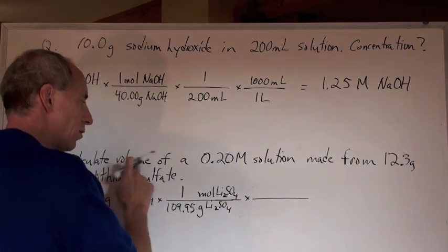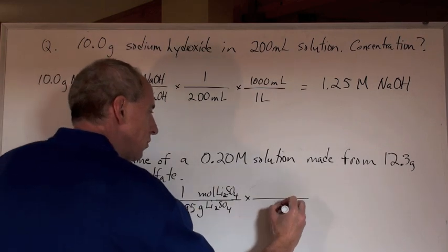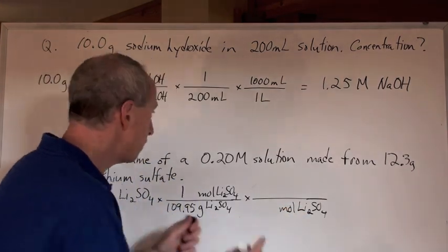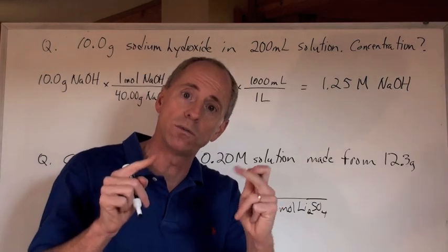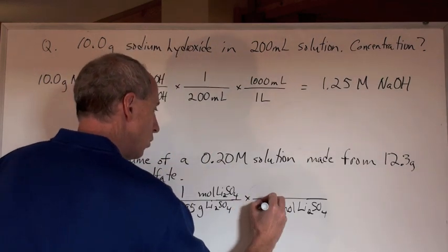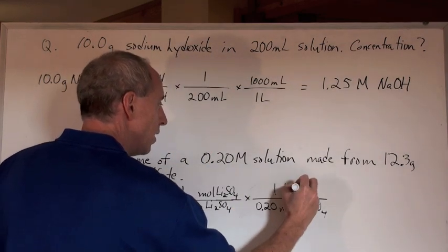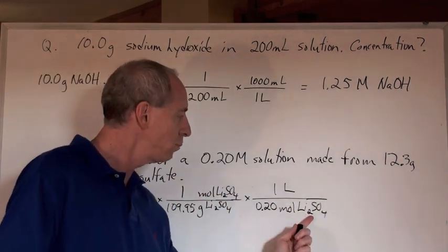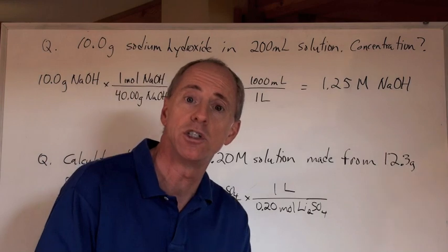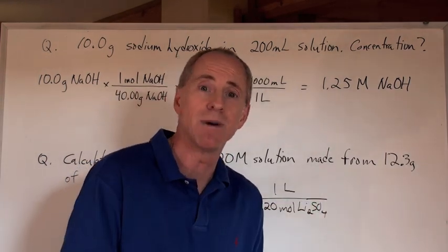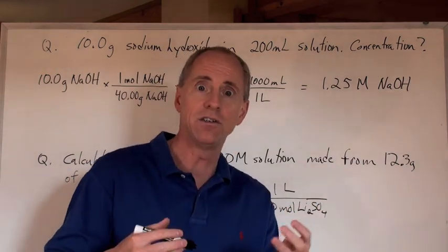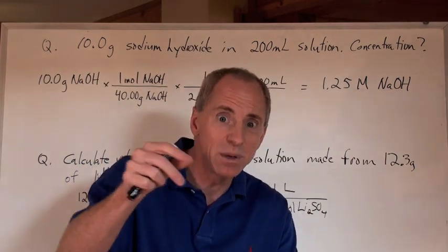What do I want? I want volume. I don't want moles — that means I need something that cancels out the moles of Li₂SO₄. We've got a concentration here. Big M stands for moles per liter, so that's how many moles of lithium sulfate per one liter. So: 0.20 moles per one liter of lithium sulfate solution. Notice I always put the chemical name next to moles and grams, but next to liters you don't put the chemical name — because you have liters of solution, which is mostly water with a little lithium sulfate.